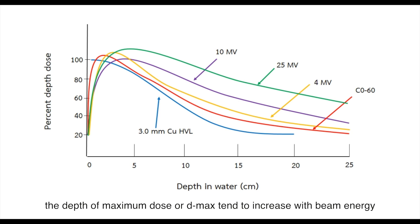The depth of maximum dose, or D-max, tends to increase with beam energy. We tend to classify kV beams as having a D-max at zero, depositing maximum dose to the skin surface. This isn't entirely true, as there is a small build-up region in low energy beams too. It's just very small.